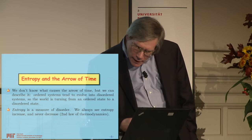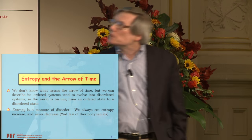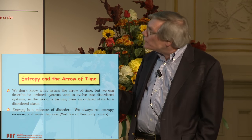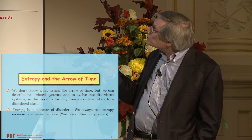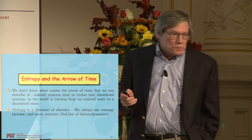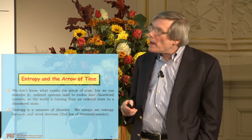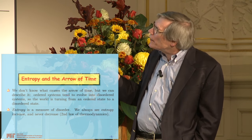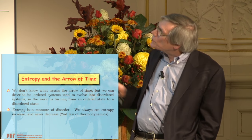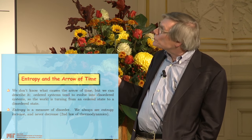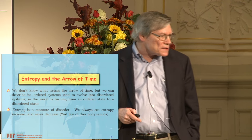How does one understand what's going on? Even though we're not sure of the origin of the arrow of time, we do have a pretty good description of what it is all about — and that is entropy. This is standard stuff, nothing new. Ordered systems tend to evolve into disordered systems, so the world is turning from an ordered state to a disordered state. That's exactly what Feynman went on to say in his lectures. There are just many more disordered states than ordered states.